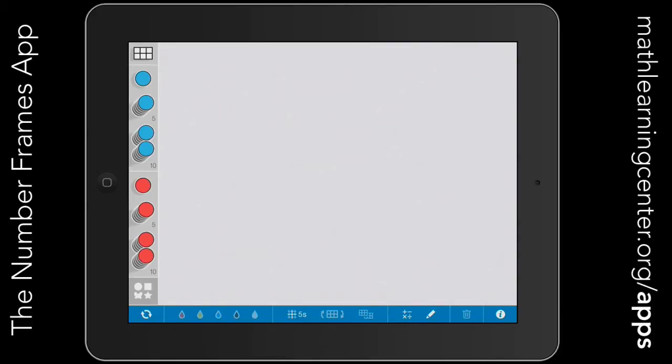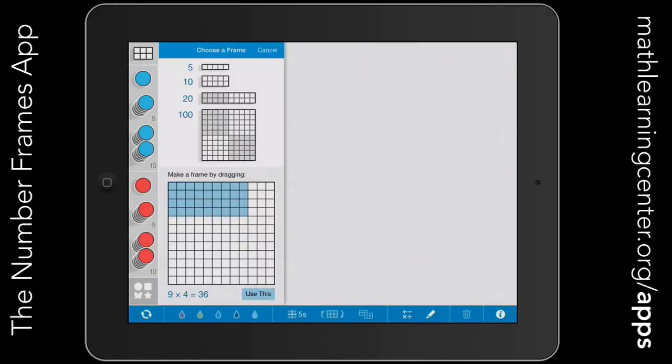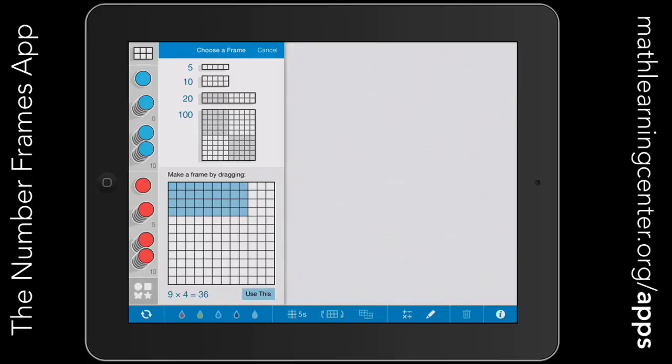The first thing you'll want to do is choose a frame size, and you can do that by tapping the button at the top left-hand corner. You can choose between a set size of 5, 10, 20, or 100, or what's really cool is you can drag this blue box around and choose a custom frame to meet your needs.